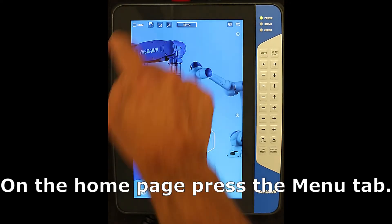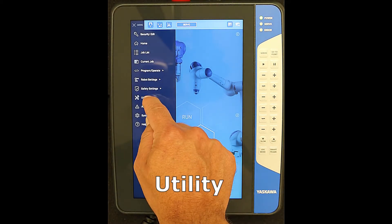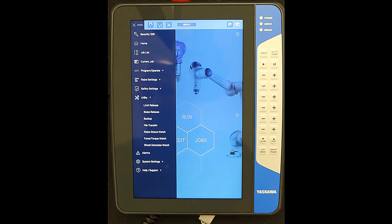On the home page, press the menu tab. Utility, then backup.